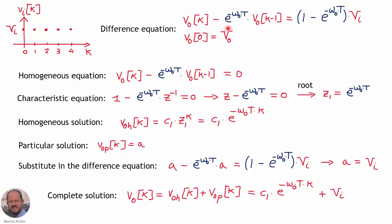This is the difference equation obtained in the previous video, with initial condition equal to V sub zero. We write the homogeneous equation by removing the excitation, setting it equal to zero. This gives us the characteristic equation — a polynomial with only one root — and this is the value of that root. The homogeneous solution is therefore a constant C times the root raised to the k exponent.